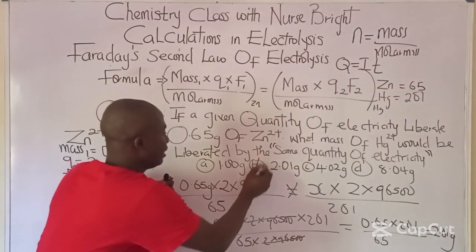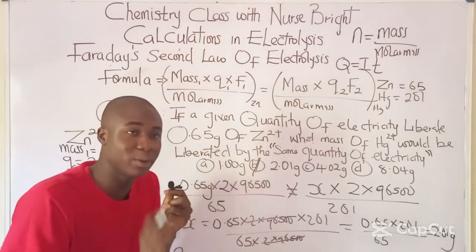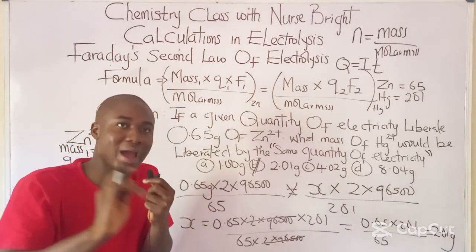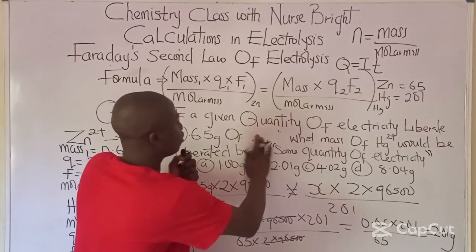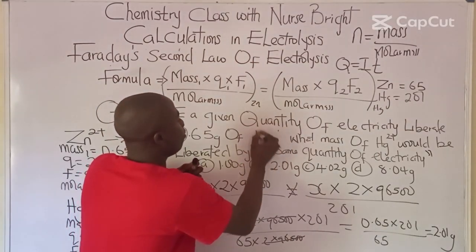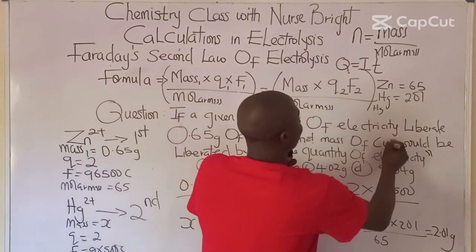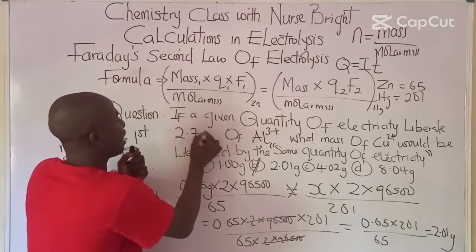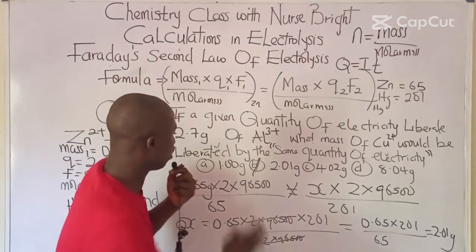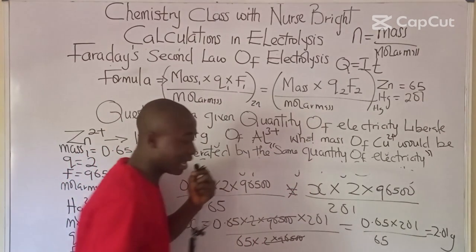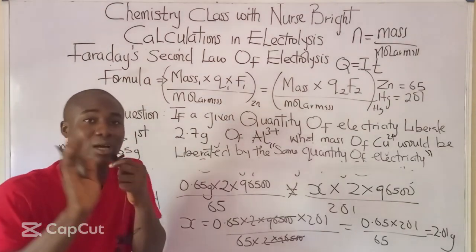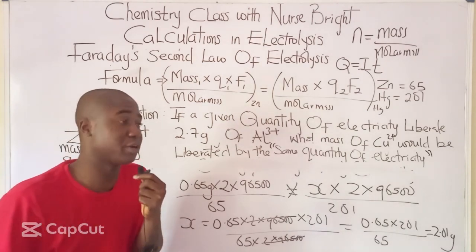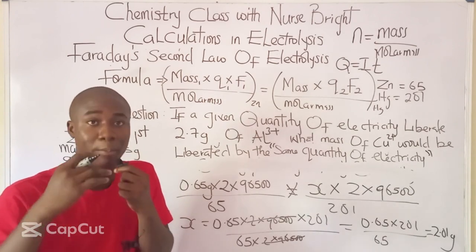You can see how questions like this are solved without stress. Your practice question: change zinc to aluminum (Al³⁺) and mercury to copper (Cu²⁺), with a mass of 2.7 grams for aluminum. Solve and provide the answer in the comment section. If you find this video helpful, click subscribe and share with your friends so you don't miss the next video.